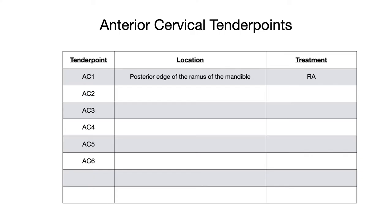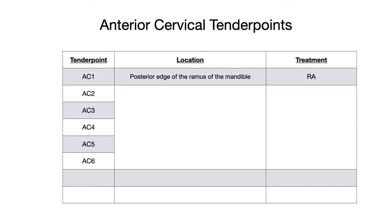Now let's talk about anterior cervical 2 through 6. We can combine all of these anterior cervical tender points since their location and treatments are pretty much the same. For all of them, they're found on the anterior lateral tip of the transverse process of the corresponding segment. The treatment is going to be flexion, side bending away, and rotation away, or F-CERA for short. So AC2 through AC6: anterior lateral tip of the transverse process, F-CERA.